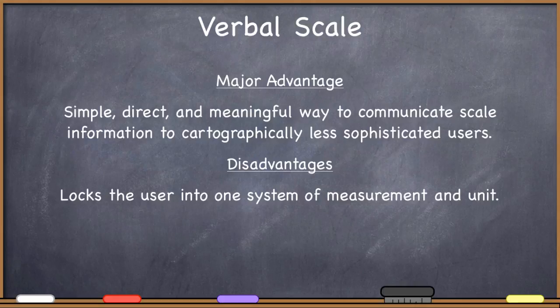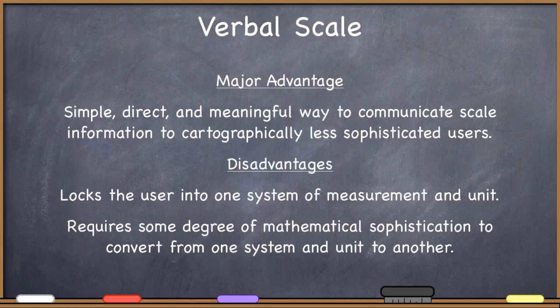The disadvantages are that it locks the user into one system of measurement and unit. Unlike the representative fraction which you are communicating in a unitless way, here you're actually telling the user something about the relationship between the size of the map and the world in a very unit-specific way. And so that sort of locks people in to using one particular unit of measurement or one particular system of measurement. And of course, they could do their own conversions to some other unit, but you are definitely prompting them to use the particular system of measurement and unit of measurement that the scale is expressed in. And so it requires some degree of mathematical sophistication, not a tremendous amount of mathematical sophistication, but you are requiring your user to do some more work to convert from one system and unit to another.